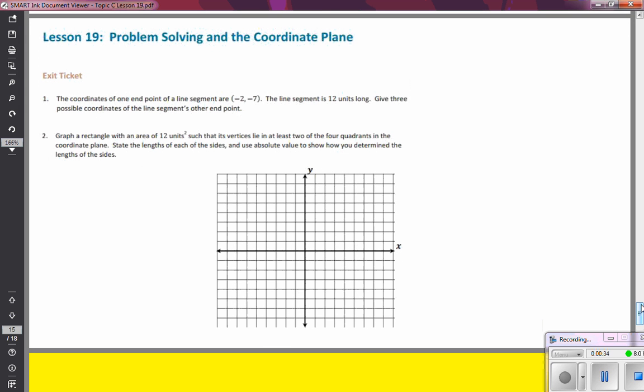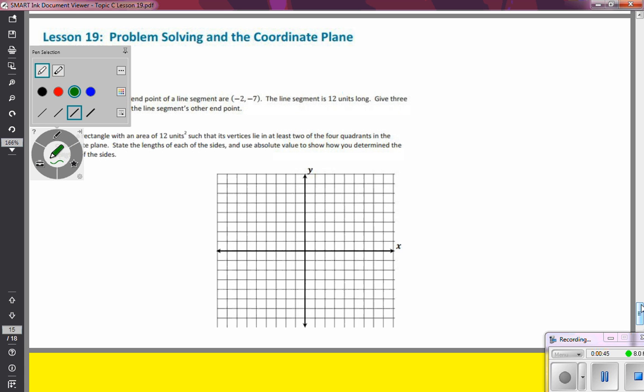The first one says the coordinates of one endpoint of a line segment are negative two, negative seven. So I'm going to go ahead and graph that on this coordinate grid.